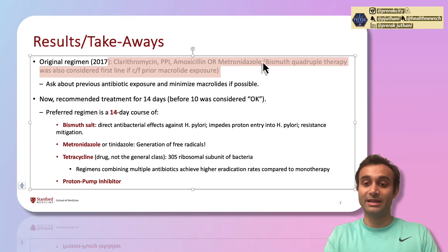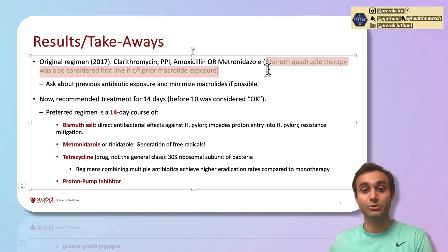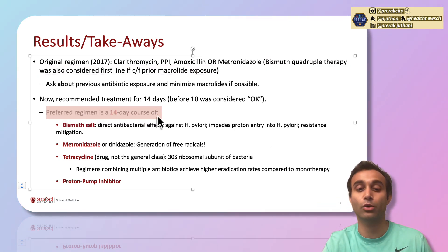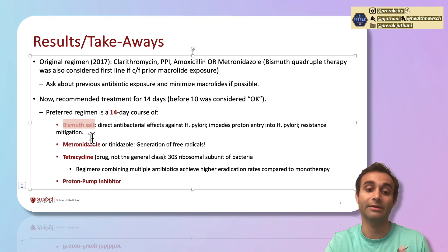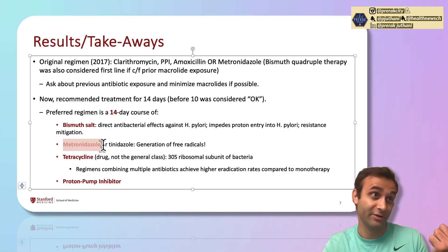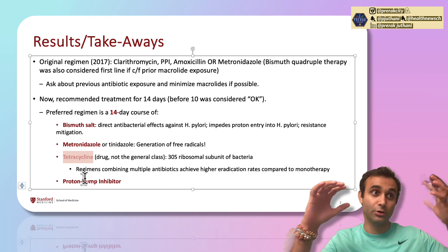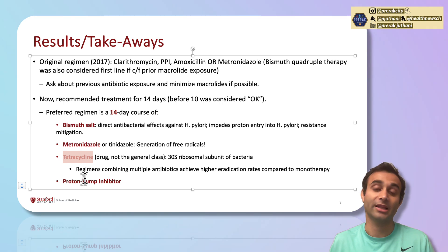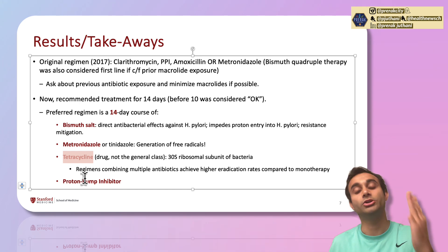Now in 2024, clarithromycin resistance is so high that the preferred regimen is a 14-day course of bismuth quadruple therapy. Bismuth is an element on the periodic table with direct antibacterial effects against H. pylori. Metronidazole helps eliminate the bacteria through the generation of free radicals. The regimen also includes tetracyclines and a PPI. So the new regimen consists of bismuth, metronidazole, tetracyclines, and a proton pump inhibitor — all four drugs taken for 14 days.